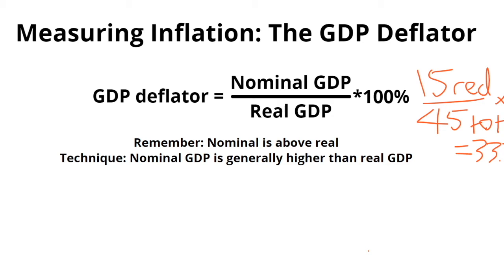Think about it in a similar way here, in that you take nominal GDP, divide by real GDP, and multiply it by 100%, and your GDP deflator is essentially that percentage.